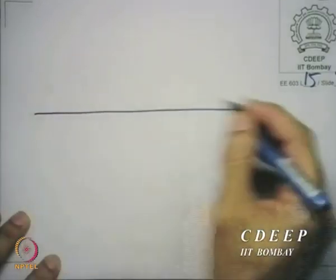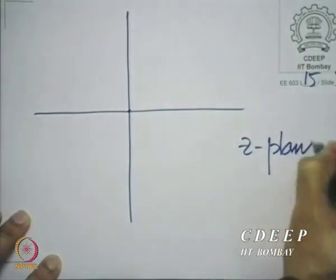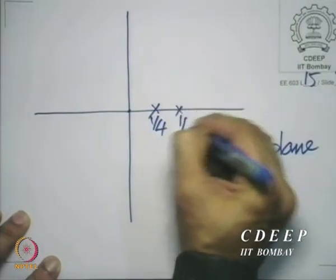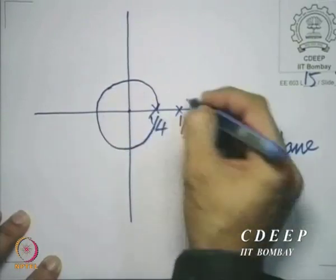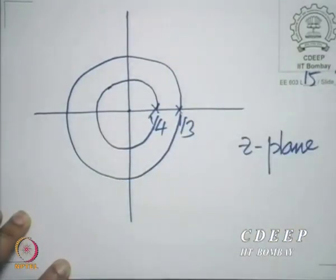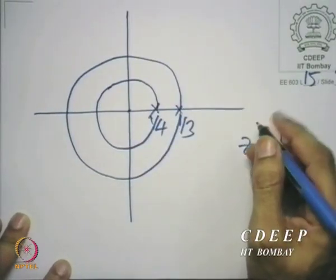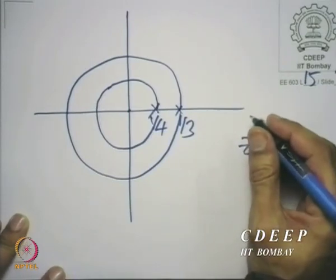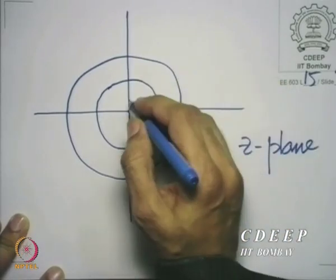To identify the regions, we mark the singularities ¼ and ⅓ and draw concentric circles centered at the origin passing through each of these singularities. If we want simply connected regions — regions where any two points can be joined by a line completely within that region — then there are only three possible simply connected regions that these two concentric circles can give.